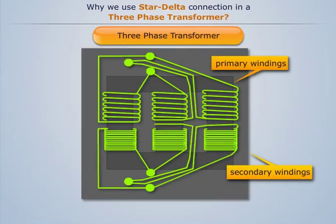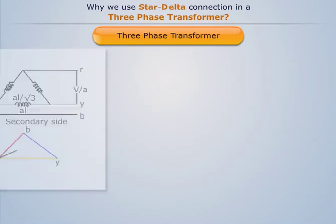In this type of connection, the primary is connected in star fashion while the secondary is connected in delta fashion.